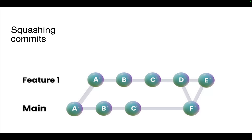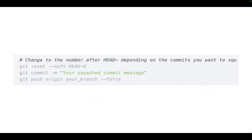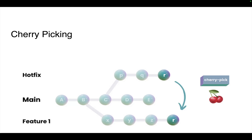Git squashing is used to condense multiple commits into a single cohesive commit. Since history will be altered, it is important to be mindful of the effects on project history. The preferred method involves moving the HEAD pointer back x number of commits while keeping staged changes: `git reset --soft HEAD~x` where x is the number of commits to squash. Then do `git commit -m '<combined message>'` followed by `git push origin <branch-name> --force`.